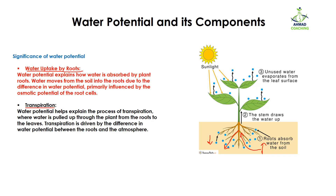The second significance is transpiration — the evaporation of water from the aerial parts of the plant as water vapor. If the water potential in the environment is low and water potential in the leaves is high, water will move from the leaves to the outside air. Conversely, if water potential is higher in the air than in the leaves, transpiration will not take place.